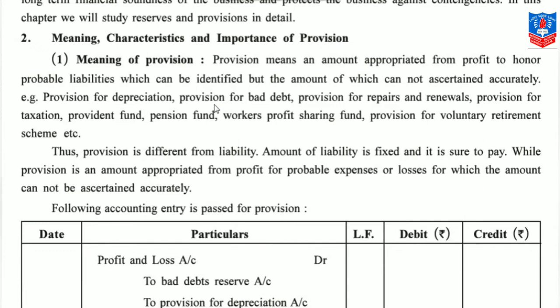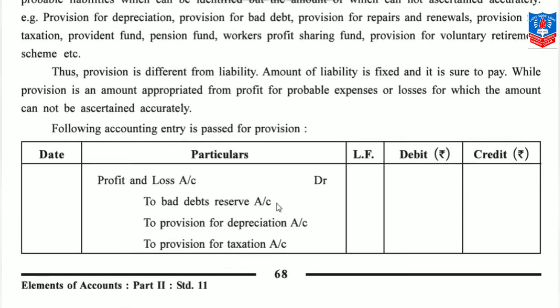Provision is different from liability. The amount of a liability is fixed and it is sure to be paid, while provision is an amount appropriated from profit for probable expenses or losses for which the amount cannot be ascertained accurately. You can see on screen all these provisions — bad debt reserve, provision for depreciation, provision for taxation. Though bad debt reserve has the word 'reserve,' don't get confused — it comes under the heading of provisions because it is our liability regarding debts that may not be recoverable.